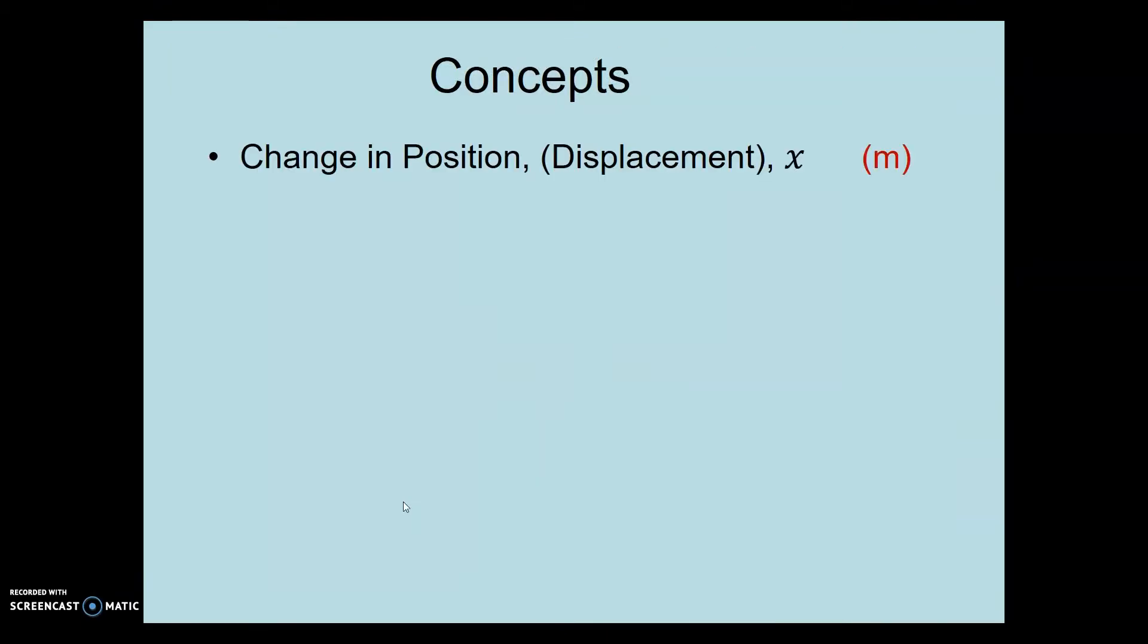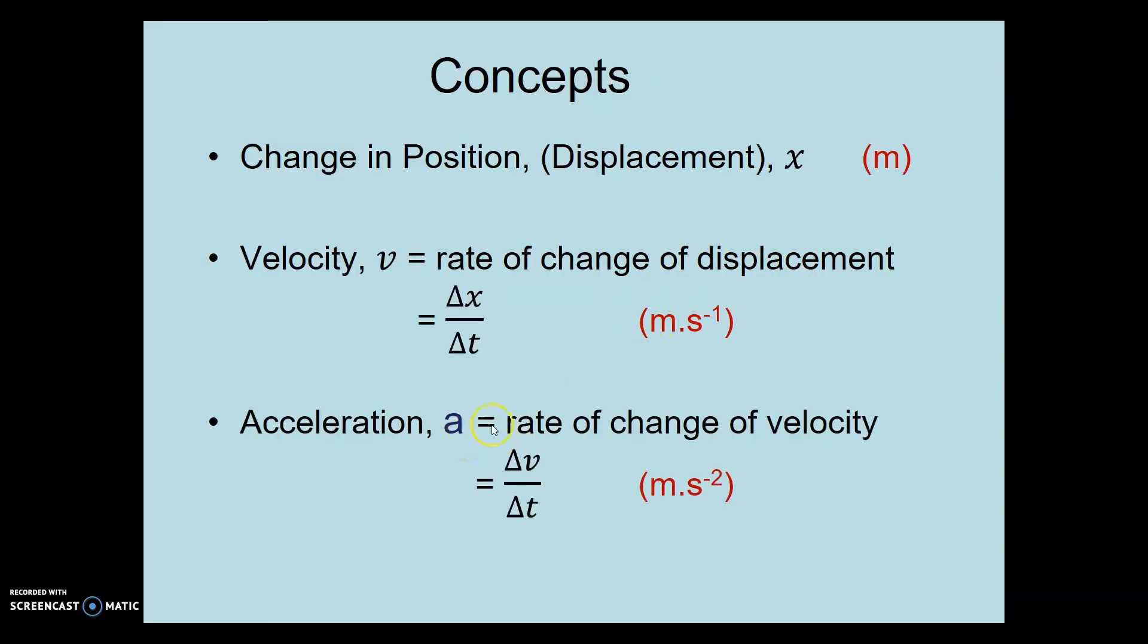Change in position or displacement is measured in meters. Velocity is the rate of change of displacement, delta x upon delta t, in meters per second. And acceleration is the rate of change of velocity, delta v upon delta t, meters per second per second. These are all vector quantities.